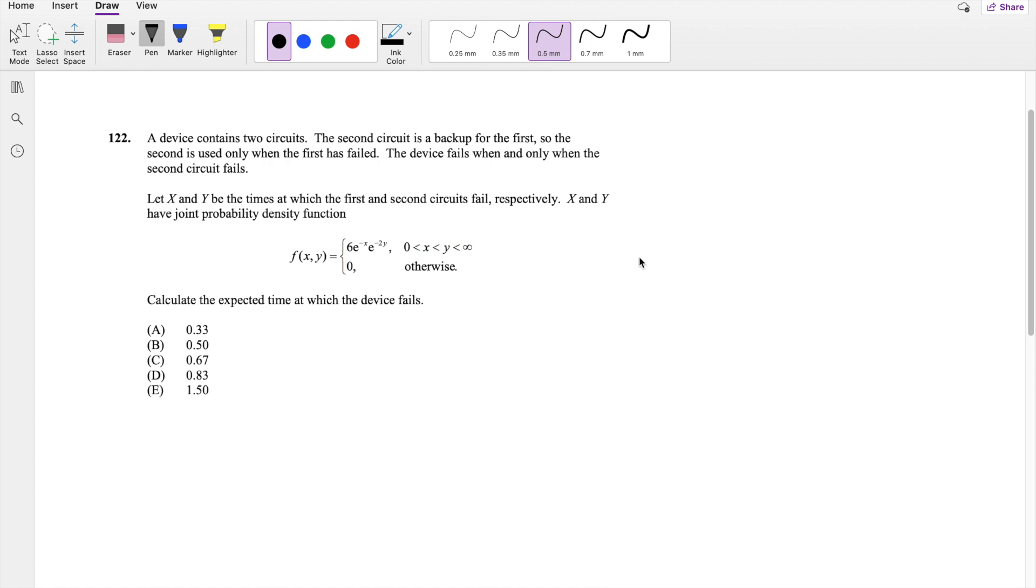So this function exists on this interval here, where x is less than y. But anyways, it only fails because we're asked to find the expected value when the device fails. It only fails if the second one fails, only when the second one fails.